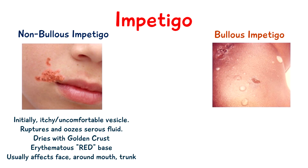In non-bullous impetigo, initially there is the presentation of an itchy, uncomfortable vesicle which often ruptures and oozes serous fluid. It then dries to form the typical golden-colored crust with a red erythematous base. The lesions are usually around two centimeters in size, and at the stage where crust formation occurs they are not usually painful or itchy, whereas in the initial stages they can be itchy or uncomfortable.